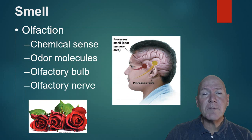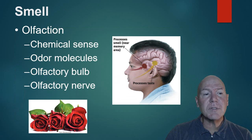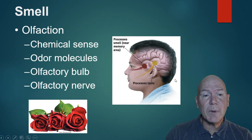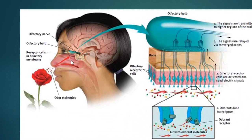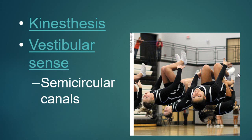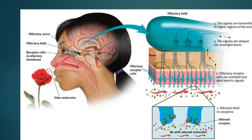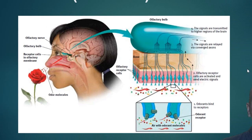Smell is also a chemical sense. Particles of an object escape and enter your nostrils. The olfactory bulb and olfactory nerve are where we process smells — messages are converted into electrical impulses. Interestingly, where we process smell is located close to where memories are stored, which is why smell and memory are closely related.